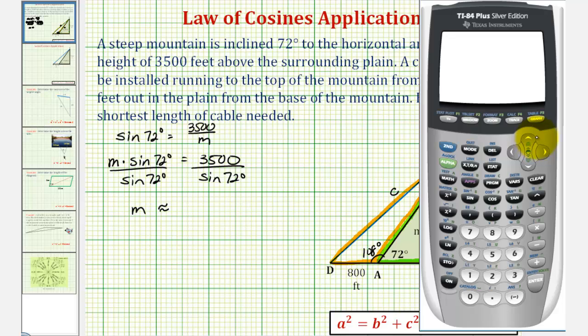And now we'll go to the calculator to determine this quotient. We should first verify that we are in degree mode, so we'll press the mode key. Notice how degree is highlighted, so we'll go back to the home screen and enter 3,500 divided by sine 72 degrees. So M is approximately 3,680.12 feet.